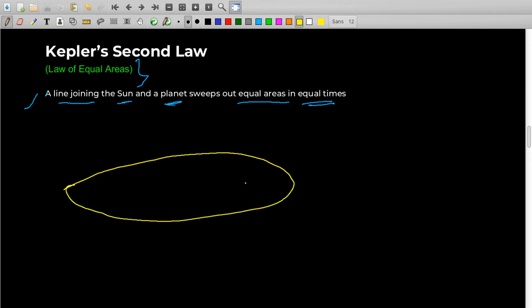Kepler's second law is also called the law of equal areas. The law says that a line joining the Sun and the planet sweeps out equal areas in equal time. Let's try to understand that. If there is an ellipse and the Sun is here, let's say the planet is here at a moment, then it's here after t seconds.